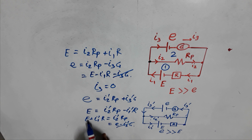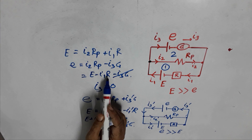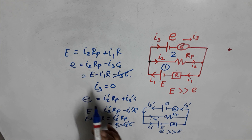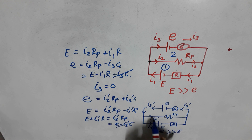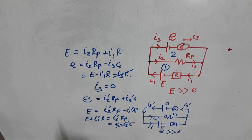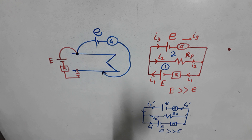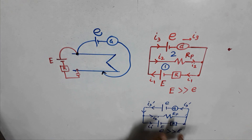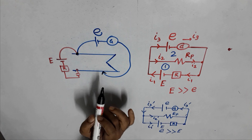At the null point: e = E − i1·R in one case, and e = E + i1'·R in the other. In both cases the unknown EMF e equals the known quantity. The key principle is that i2·Rp = small e, or i2'·Rp = small e — only then do we get the null point. This is the basic principle behind the potentiometer.